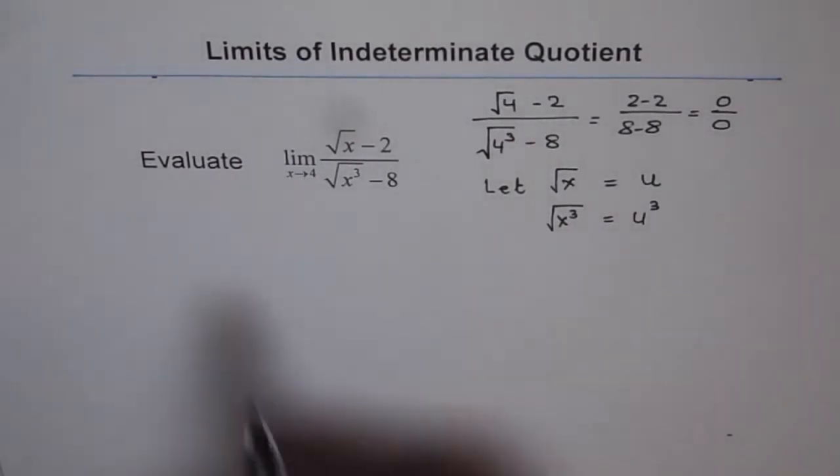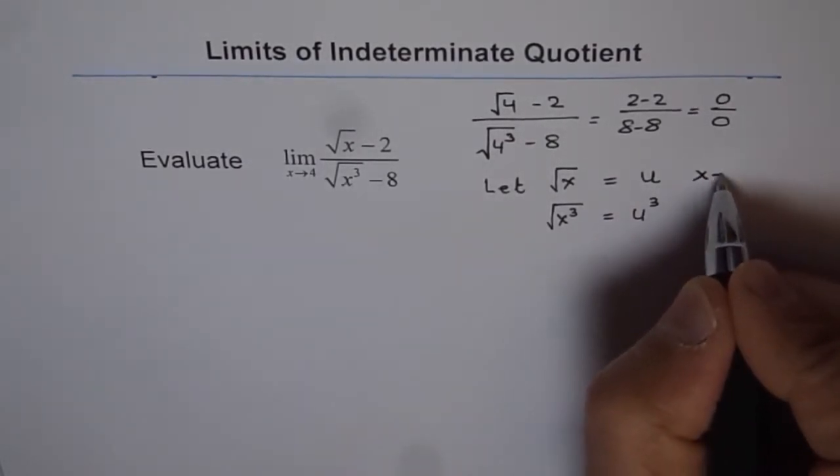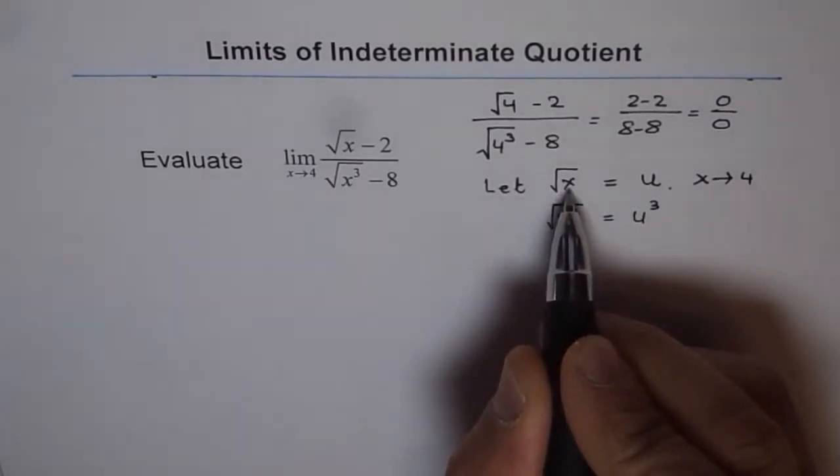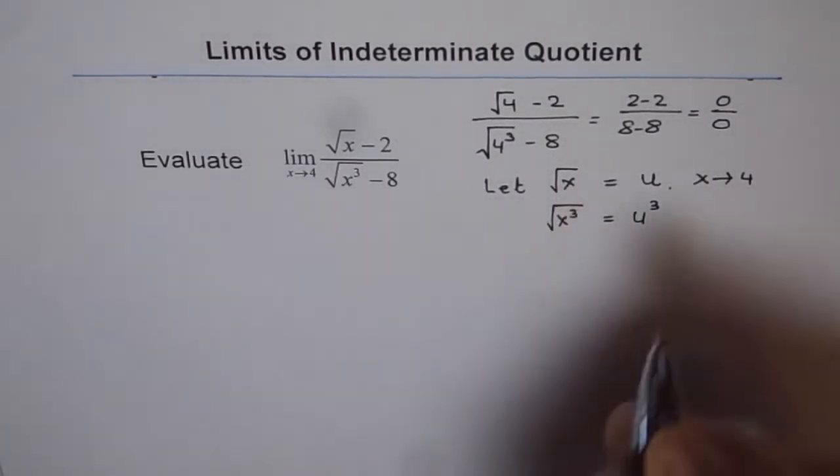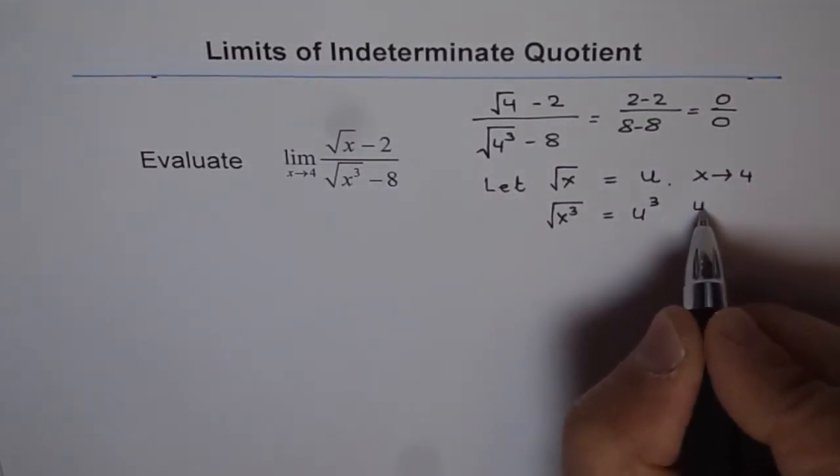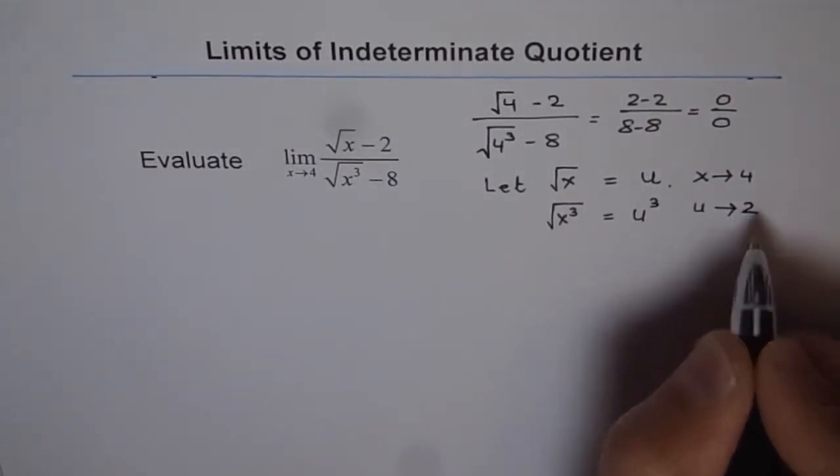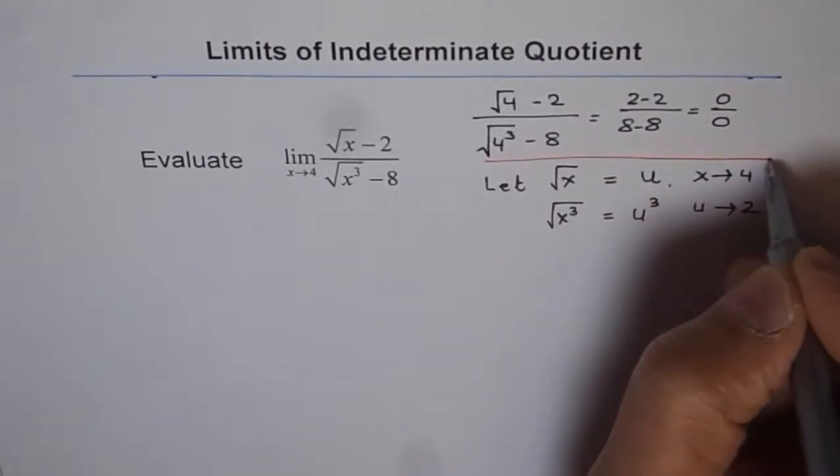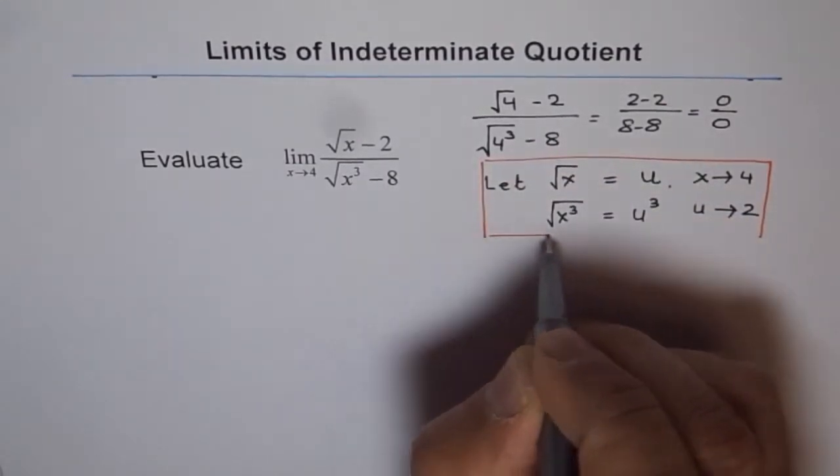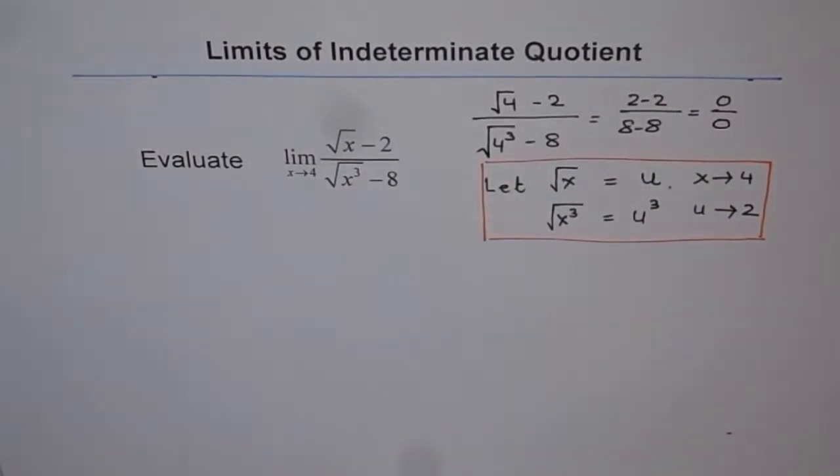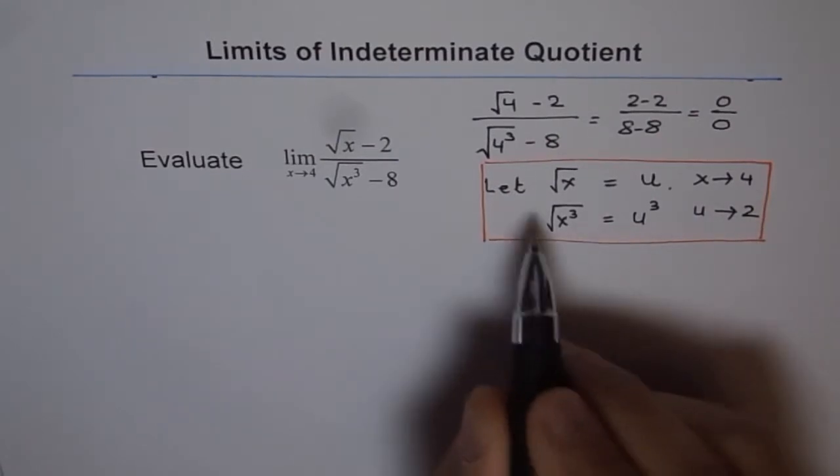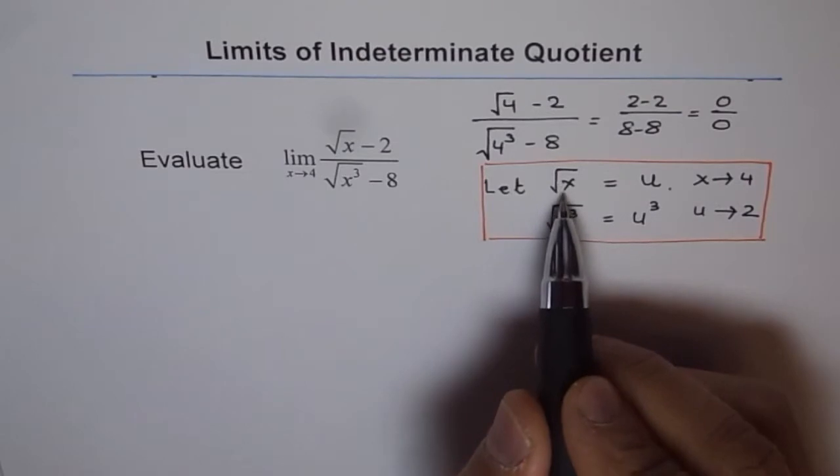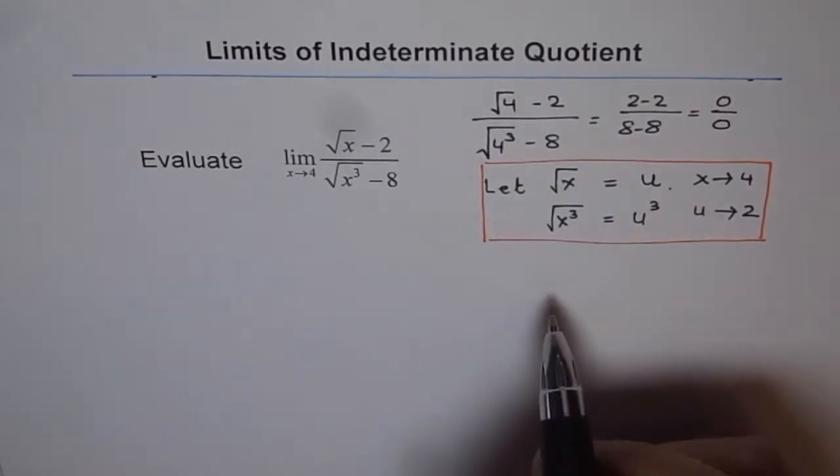Now we need to change the limit also. As x approaches 4, what happens to u? If I write 4 here, square root of 4 is 2. As x approaches 4, u approaches 2. So this is the kind of substitution which we are going to do to solve or simplify our question. That is substitution of one variable, which is square root of x, by another variable, which is u for us.